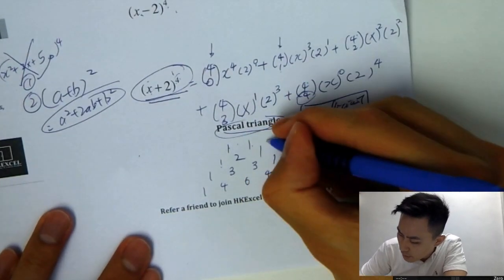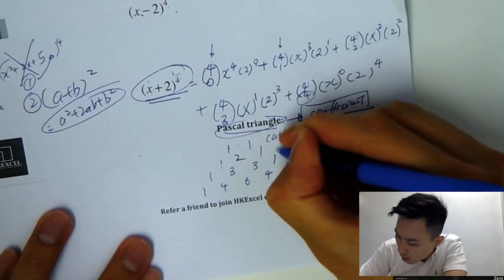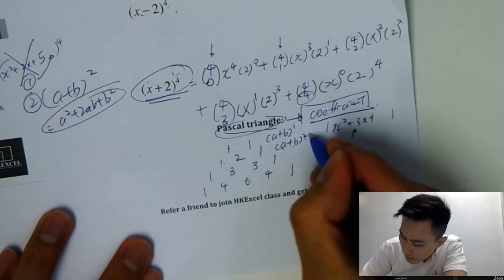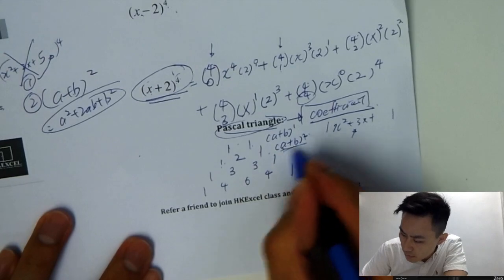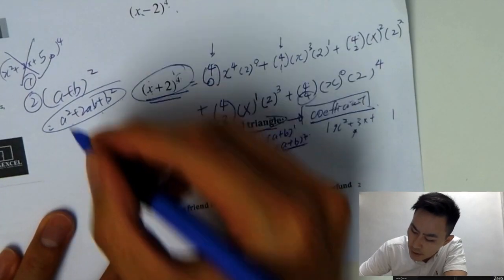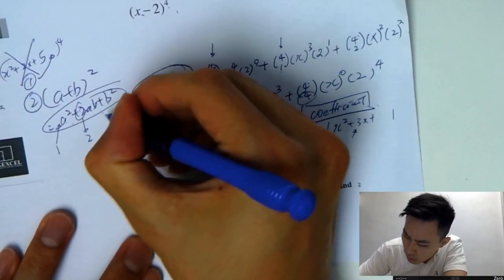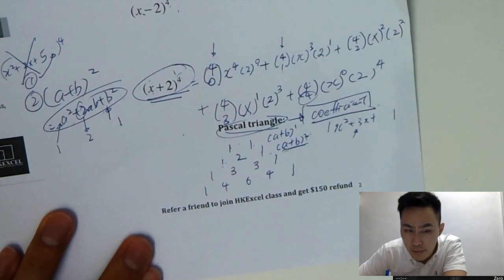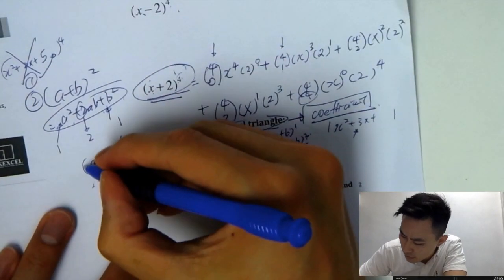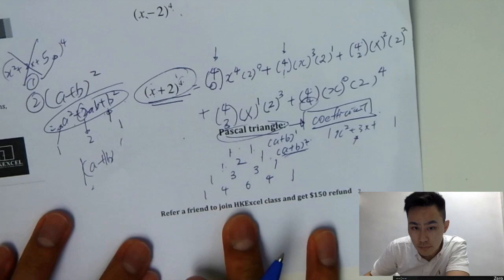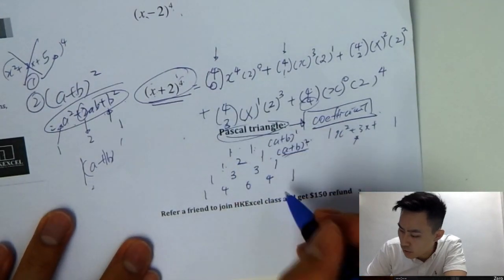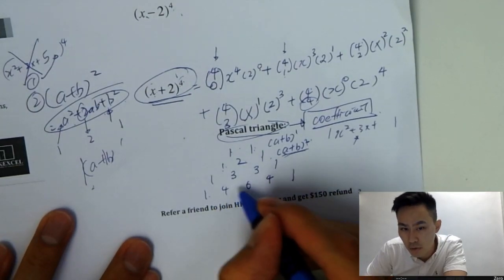What does the row 1, 1 mean? That's A plus B to the power 1. And 1, 2, 1 is A plus B to the power 2. So when you expand A plus B squared it's A squared plus 2AB plus B squared — the coefficients are 1, 2, 1. And for A plus B to the power 1, opening the bracket gives you A plus B, so the coefficients are 1 and 1. For power 4, you refer to the fourth row, which is 1, 4, 6, 4, 1.